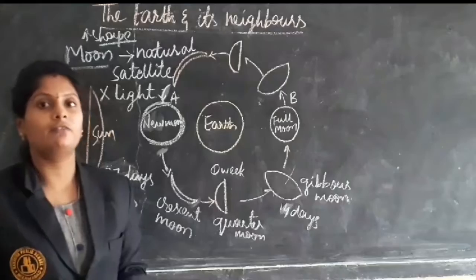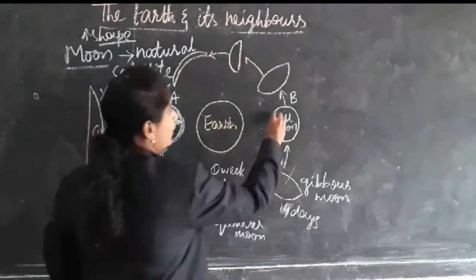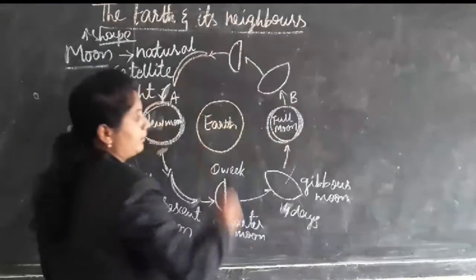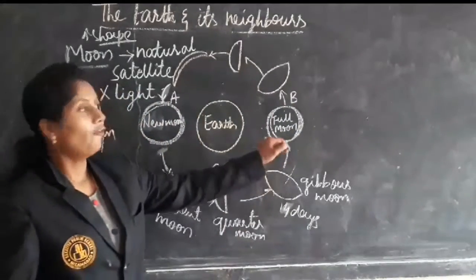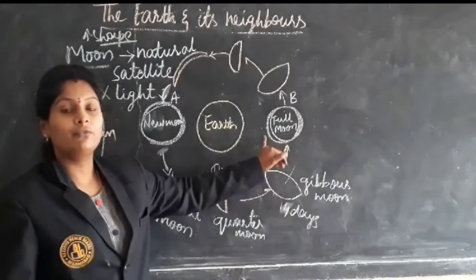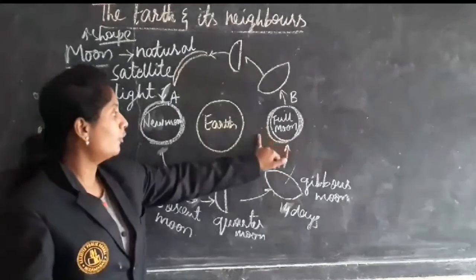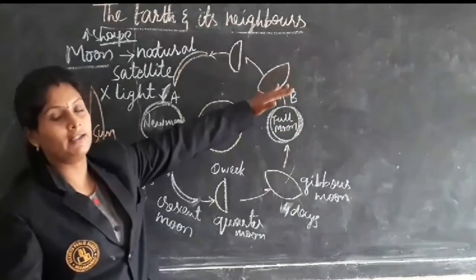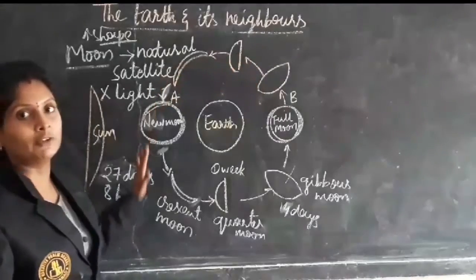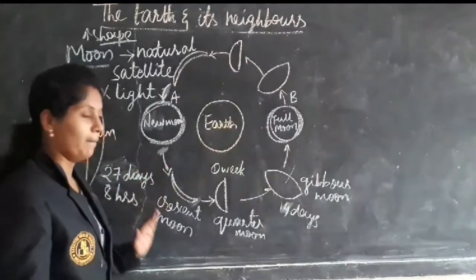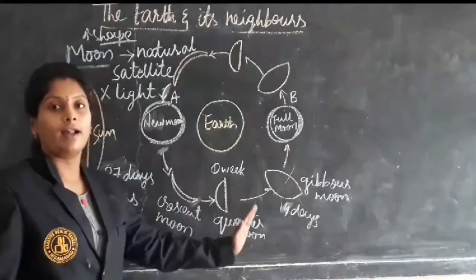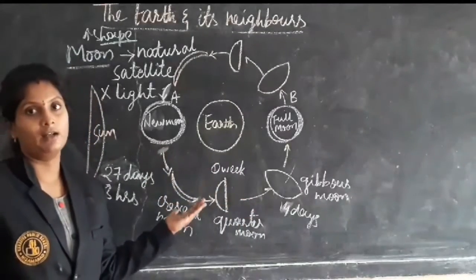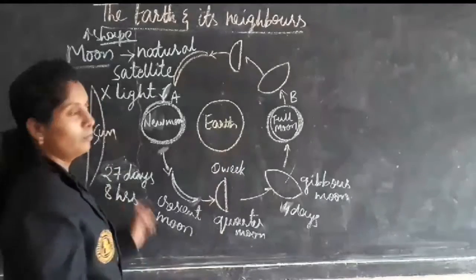On the 15th day we can see the complete moon directly — that we call it as a full moon. Again it will be decreasing, and as the moon changes its position we can see a number of shapes. Those shapes are visible only with the help of sunlight.